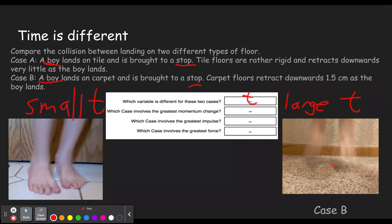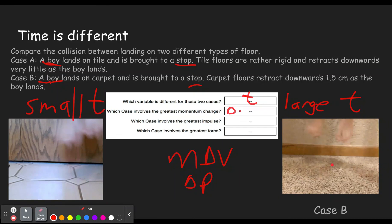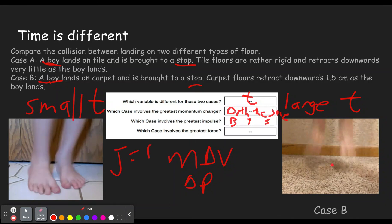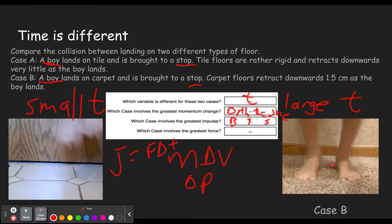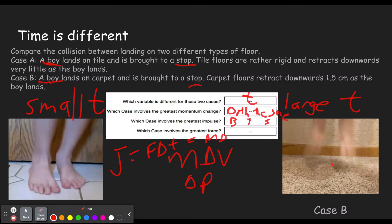So time is the thing that's changing. Which involves the greatest change in momentum? Well, M was the same and delta V were the same. So that means the change in momentum had to be identical. So these are both the same. And this one's also both the same because the impulse is causing the change in momentum.